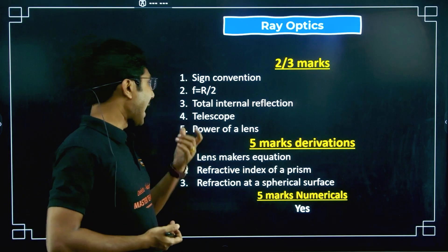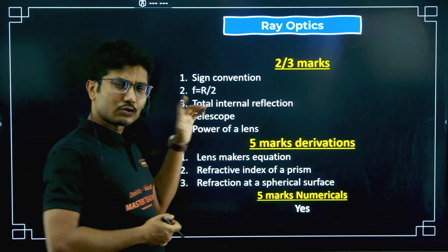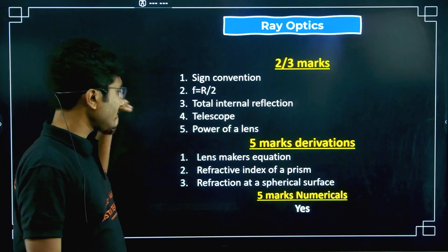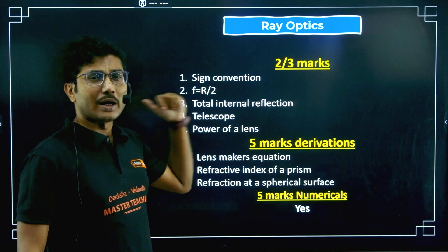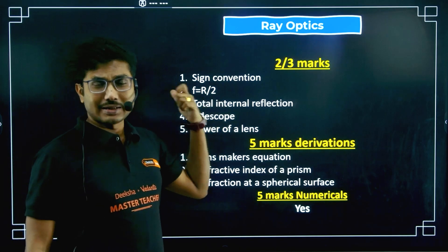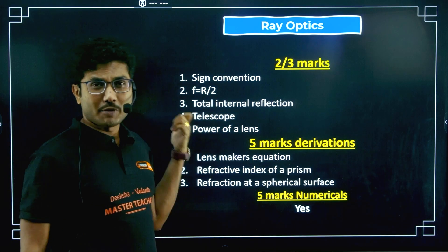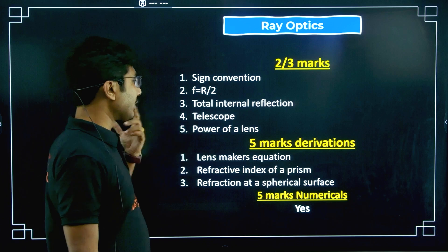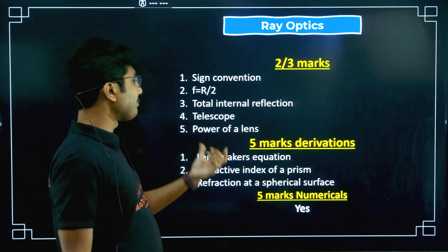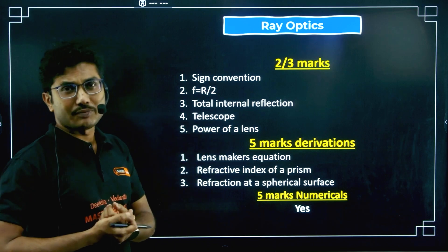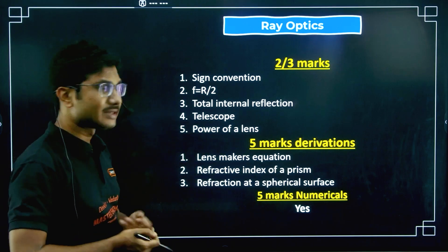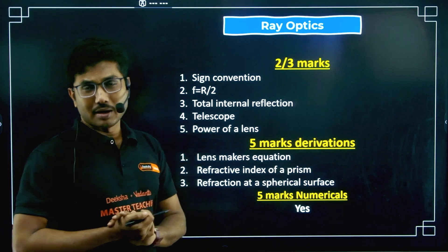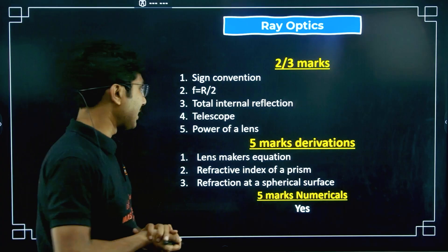Telescope and compound microscope — both can come. How the image is formed in a compound microscope is something you need to be aware of. Power of a lens: the formula for power of a lens, and based on that, two or three-mark questions might come.